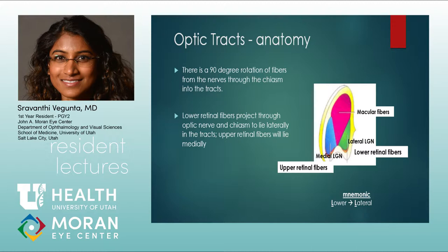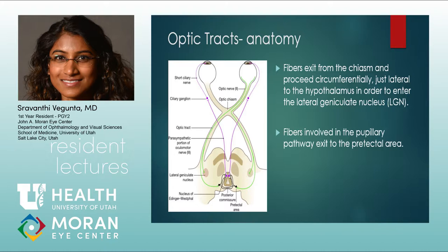The fibers from the retina rotate approximately 90 degrees as they travel through the optic tracts and through the lateral geniculate nucleus. Upper retinal fibers rotate 90 degrees to lie medially in the LGN and lower retinal fibers rotate to lie laterally, with macular fibers in the center hilum. In the optic tracts, the pupillary pathway fibers branch off before the LGN and go to the pretectal nucleus — these correspond to non-visual retinal ganglion cell axons. Other fibers project onto the suprachiasmatic nucleus to regulate diurnal cycles.